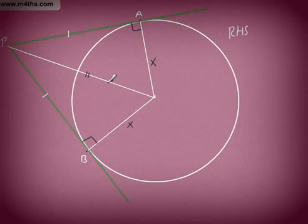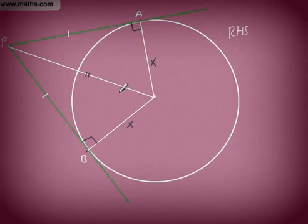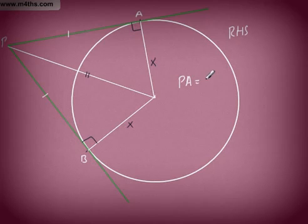Right angle — both got a right angle. Both share the same side length, and also they have the same hypotenuse. So, therefore, PA is equal to PB.